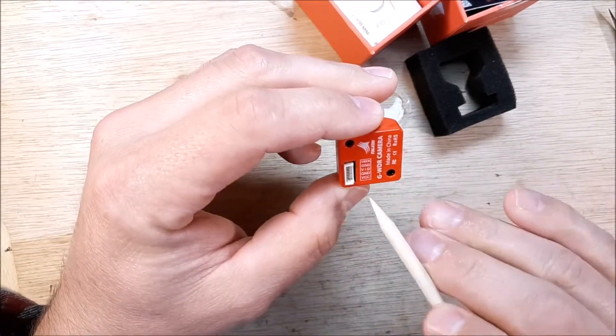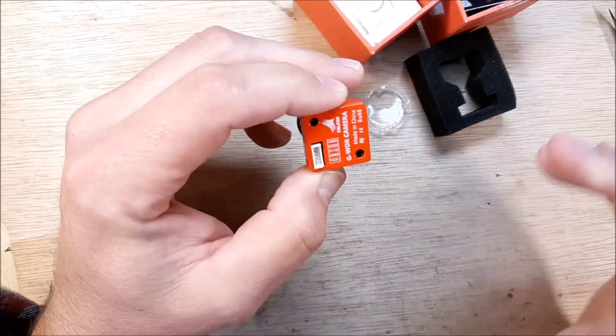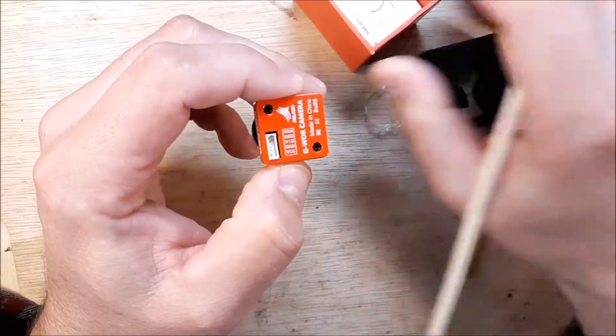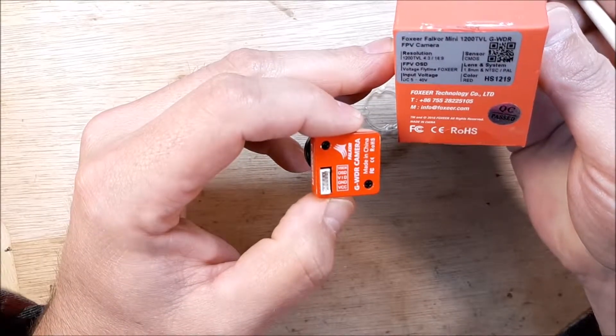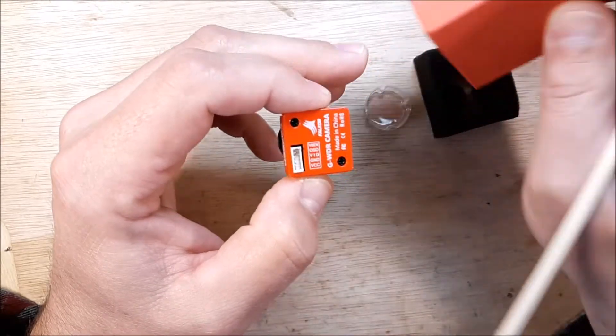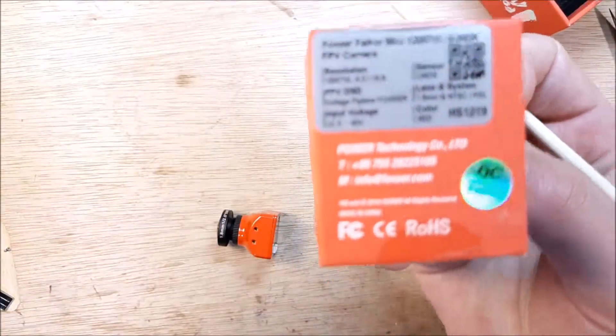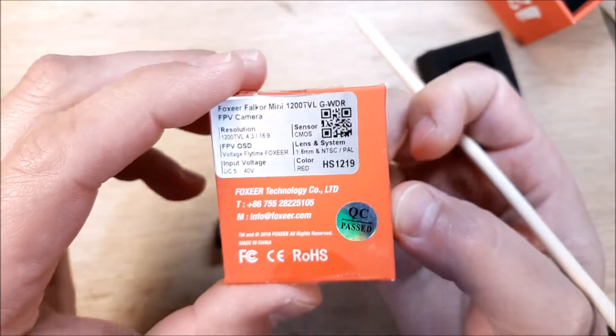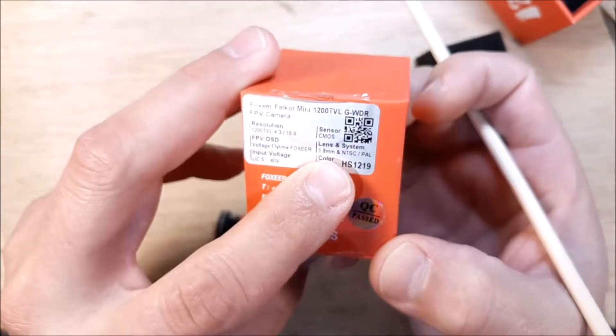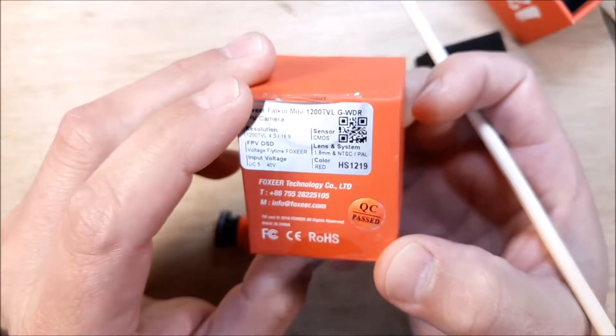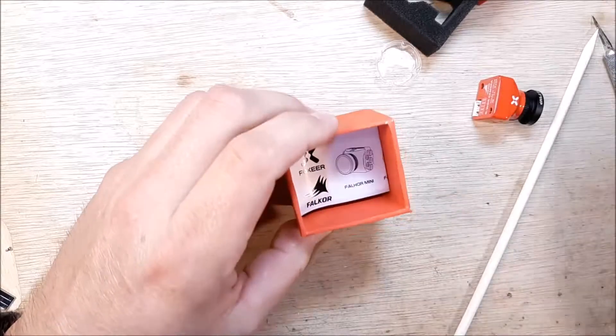So you can run it off battery voltage. Looks like you're able to go 5 to 40 volts. Let me give you a close-up of that data plate here. 1200 TV line, switchable between 4:3 and 16:9. I have the 1.8 millimeter lens.